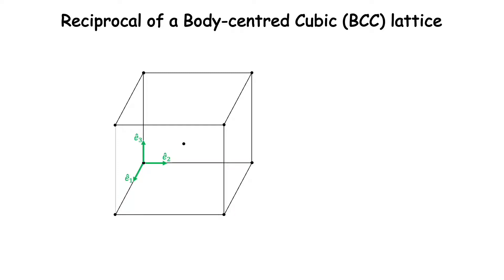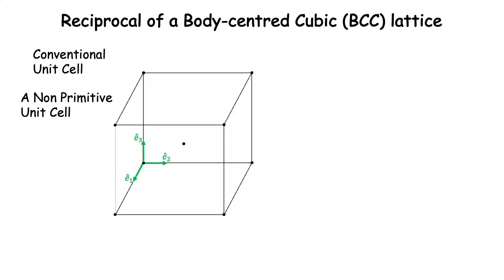In this video, we will find out the reciprocal lattice associated with a body-centered cubic lattice. The conventional unit cell of a BCC unit cell is shown here. It has lattice points at eight corners as well as one at the body center, and because it has a lattice point at the body center as well, it qualifies as a non-primitive unit cell.